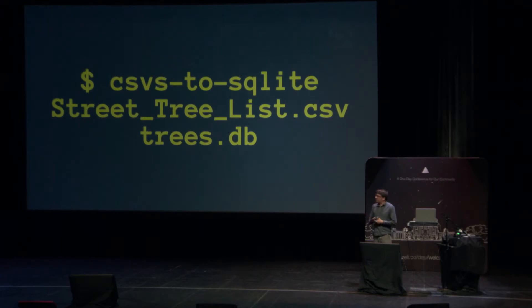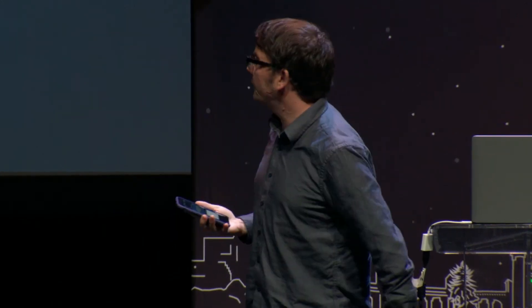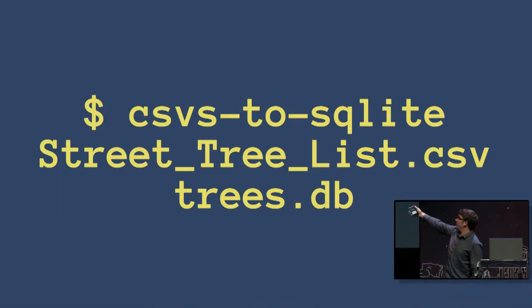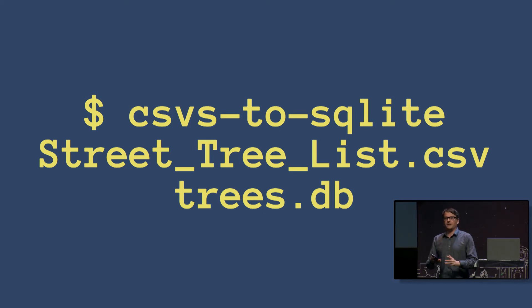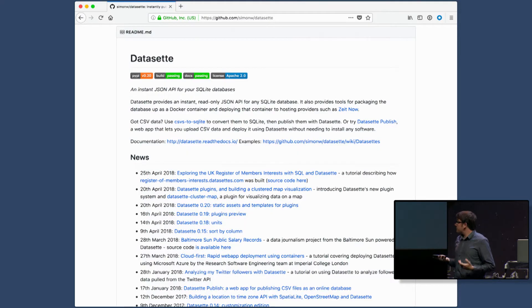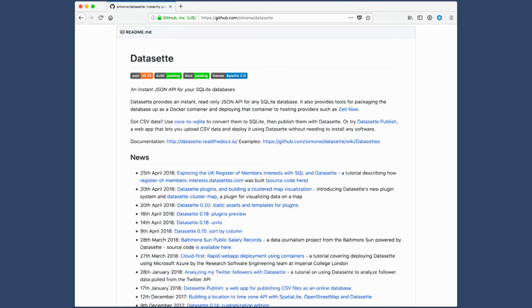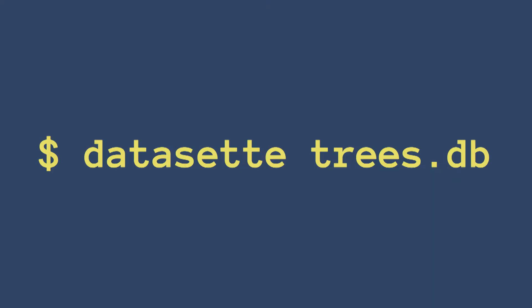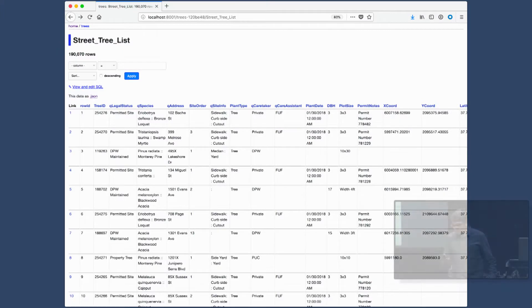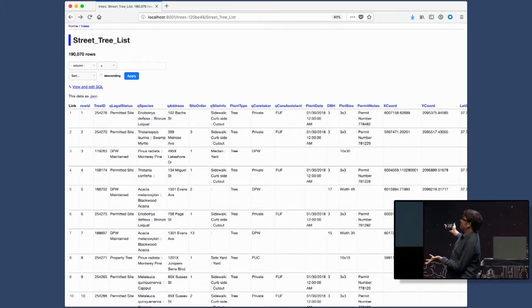So I built a tool called CSVs to SQLite — a little command line tool that can take any CSV file and turn it into a SQLite database. We can download this CSV file full of trees and turn it into trees.db, a binary blob weighing about 50 megabytes that we can upload to Zyte. And the other project I built was Datasette, a web app — a command line tool that starts a web server against one or more SQLite databases and gives you an interface for browsing them. If I run datasette trees.db, I get this: an HTML table.